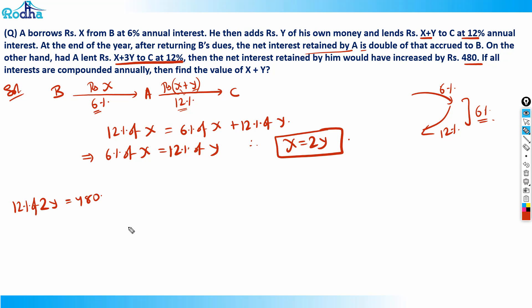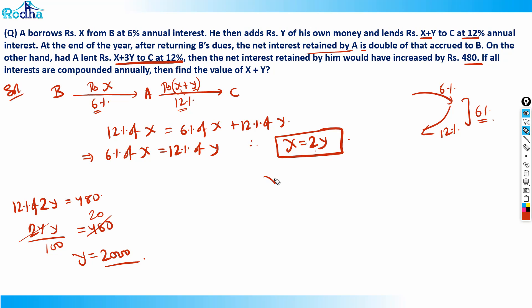So 24Y divided by 100 equals 480. Cancelling gives Y equals 2000. Since X equals 2Y, X equals 4000. Therefore X plus Y equals 6000. That's the answer!